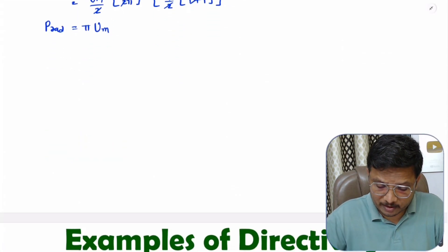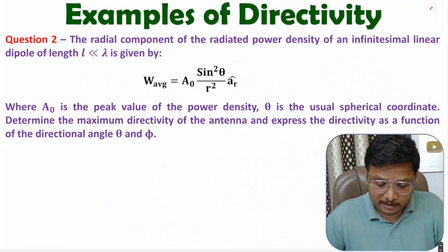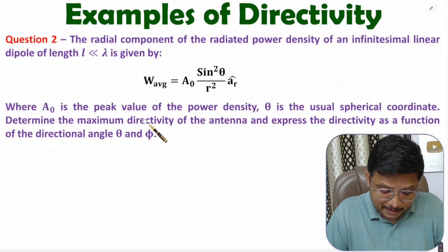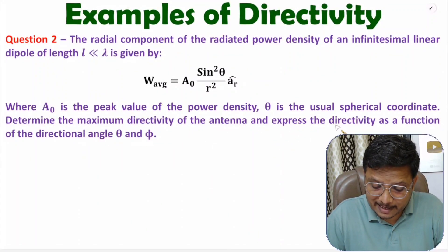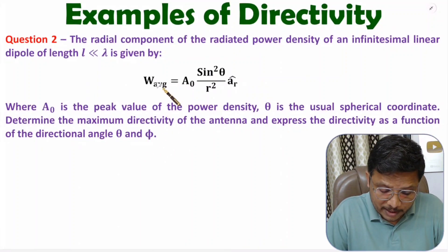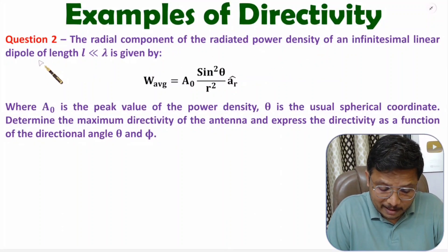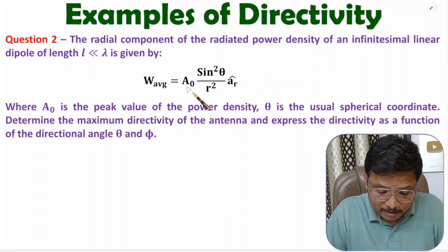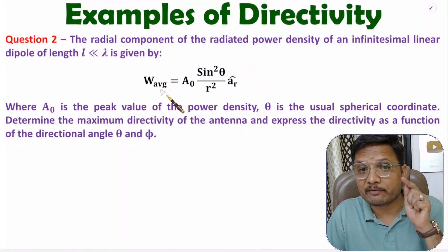In this video, I will be solving a question in which we are required to identify maximum directivity of the antenna as well as express directivity as a function of theta and phi. In the question, we have been given the power density of a dipole antenna: W_avg = A₀·sin²θ / R² in the direction of A_R.